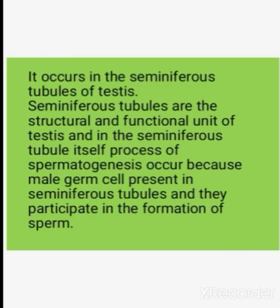First of all, we will see about spermatogenesis in detail - how sperms get formed. It occurs in the seminiferous tubules of the testis. The seminiferous tubules are the structural and functional unit of the testis because male germ cells are present there and they will make sperm.